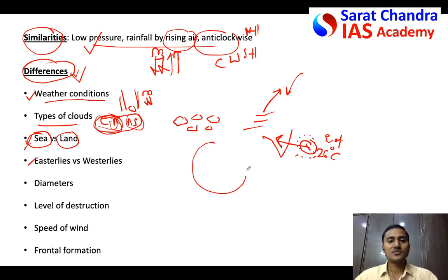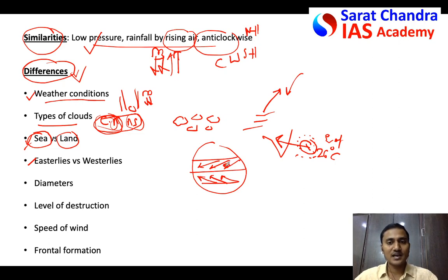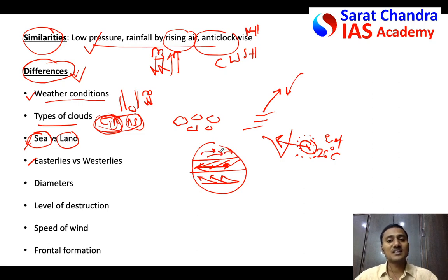Fourth difference: direction of movement. In the tropical zone, trade winds blow from the east, so tropical cyclones are pushed towards the west. Temperate cyclones occur at higher/middle latitudes where westerly winds prevail, so temperate cyclones are pushed towards the east — opposite to tropical cyclones.